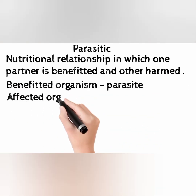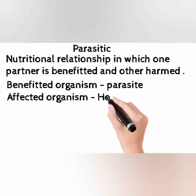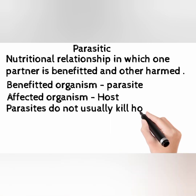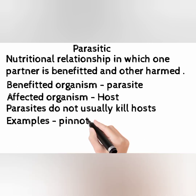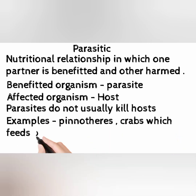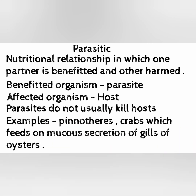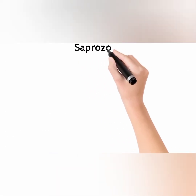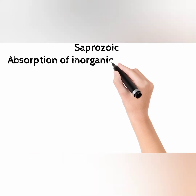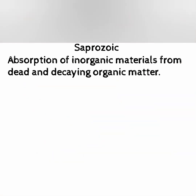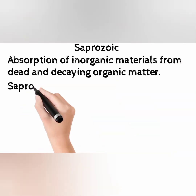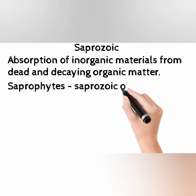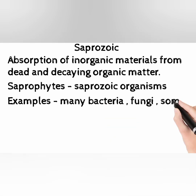Parasitism is a nutritional relationship in which one partner is benefited and the other is harmed. The benefited organism is the parasite and the affected organism is the host. Parasites do not usually kill their hosts. Example: pinnotheres crabs, which feed on mucus secretions from the gills of oysters. Saprozoic nutrition involves absorption of inorganic materials from dead and decaying organic matter. Saprophytes are saprozoic organisms; examples include many bacteria, fungi, some protists, and a few animals.